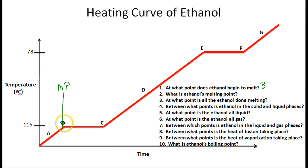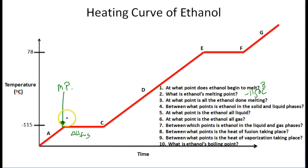Question two: what is ethanol's melting point? That happens at negative 115 degrees Celsius. Question three: at what point is all the ethanol done melting? Right here is where it begins to melt, and the heat of fusion is the amount of energy it takes to melt something — in this case ethanol. You end up with a mixture of solid and liquid ethanol as the solid is converted into liquid. All of that ethanol is done melting at point C.